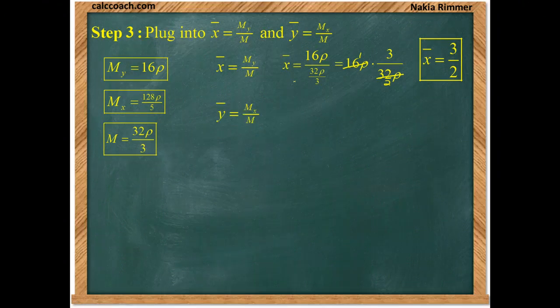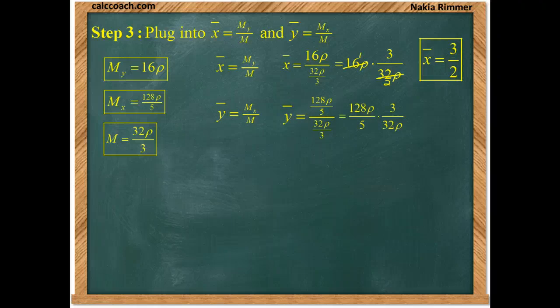Moving on to y bar, we have the moment about the x axis over the mass. So, we have 128 rho over 5, all over 32 rho over 3, multiply by the reciprocal, the rhos cancel.